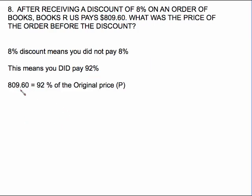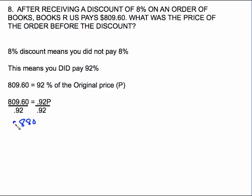Knowing this, my new price of $809 was found by doing 92% of the original price, because we only paid 92%. So the equation is 0.92 times P equals $809, and we end up with a price of $880. You can check that by doing $880 times 0.08 to get the discount, then subtracting from $880, and you'll get $809.60.